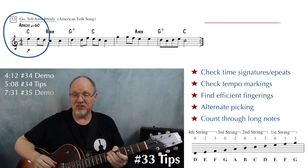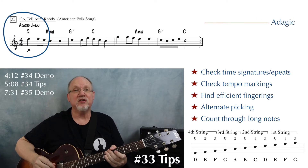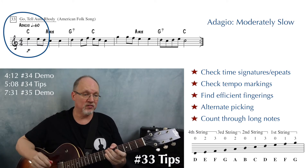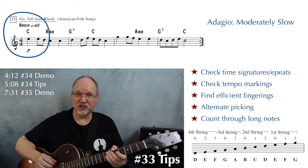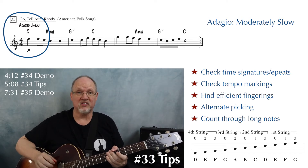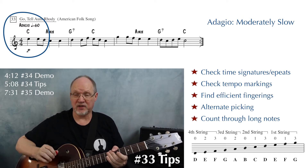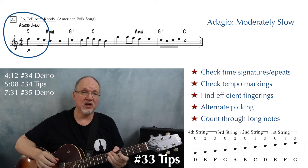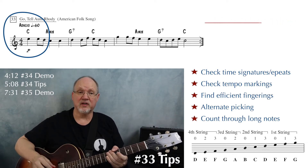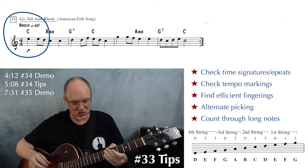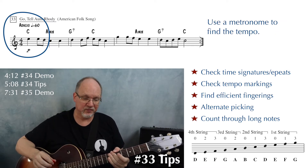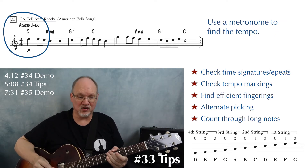At the top of page 17 we have number 33, Go Tell Aunt Rhody. This one is in 4/4 time and it's marked Adagio, quarter equals 60. So now we not only have to look at the beginning of our music for the time signature, we also look for the tempo marking. Quarter equals 60 — you can use a metronome, and that's our beat.